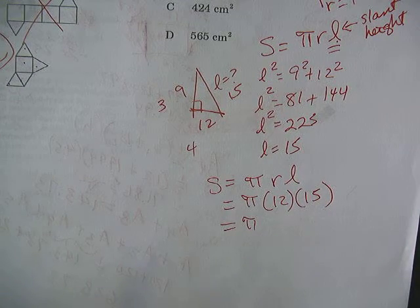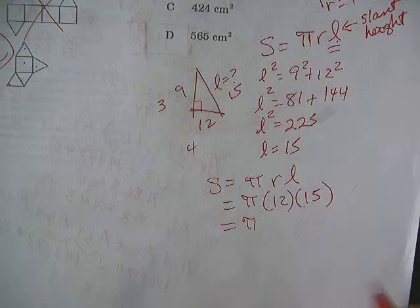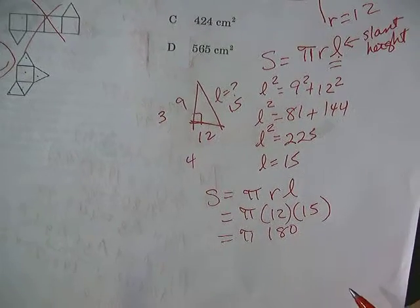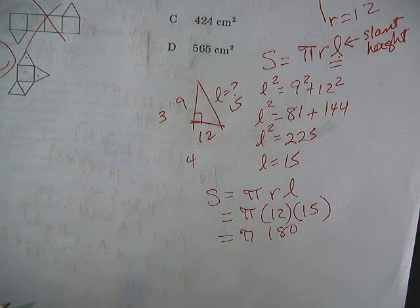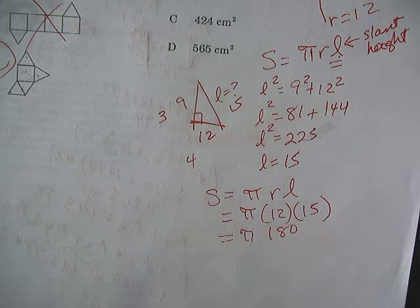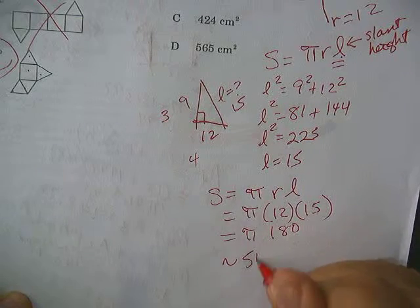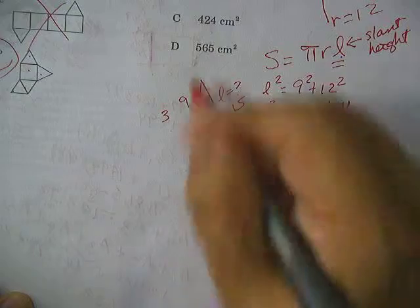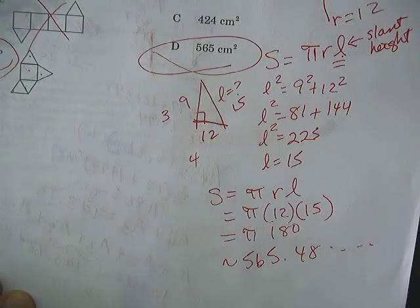Let me check. 180. So I just have to go 180 times pi. You can just make sure you use the second pi button on your calculator. And I get approximately 5, 6, 5, dot, 4, 8, and a bunch of numbers. You can see that matches D on the thing.